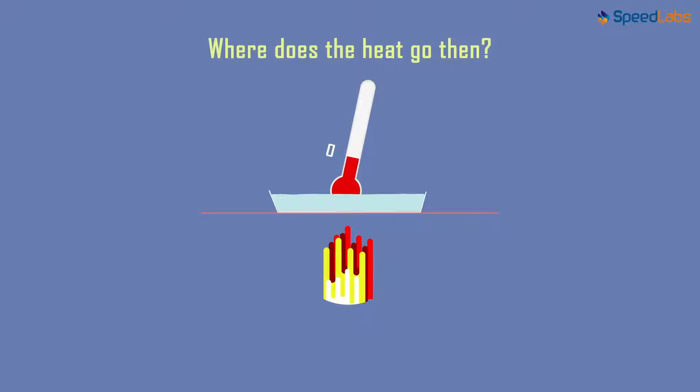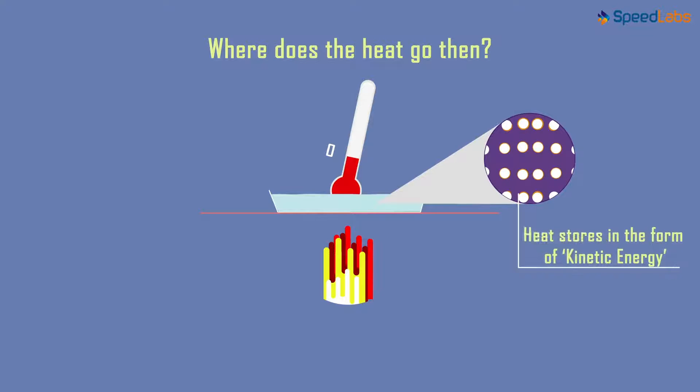The truth is that the particles of matter absorb the heat and store it inside them. This heat is in the form of kinetic energy. As this heat is hidden and it doesn't show its presence on the thermometer, we term it as latent heat.